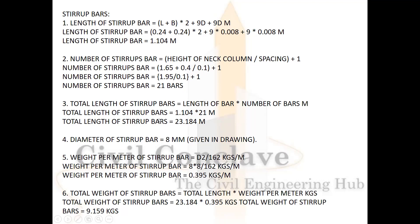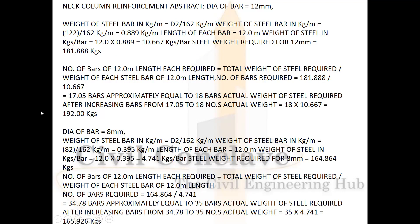Total length of stirrup bars = 1.104 × 21 = 23.184 meters. Diameter = 8mm, weight per meter = 0.395 kg/m. Total weight of stirrups = 23.184 × 0.395 = 9.195 kg. Neck column abstract: total main bar weight ≈ 181.88 kg, total bars ≈ 192 kg, stirrups weight = 165.926 kg.